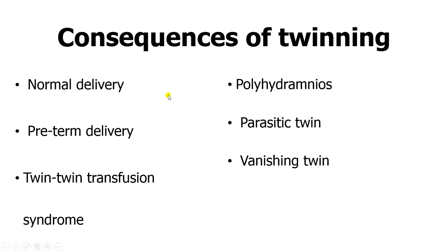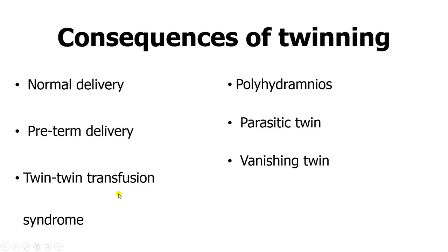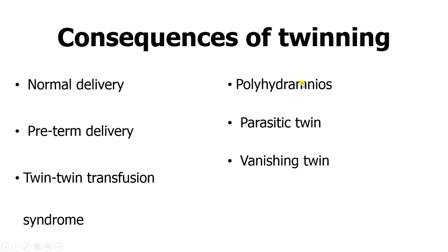The main consequences of twinning include normal delivery or sometimes preterm delivery, which is often caused by premature rupture of membranes. Other complications include twin-to-twin transfusion syndrome, polyhydramnios, a parasitic twin, or a vanishing twin.